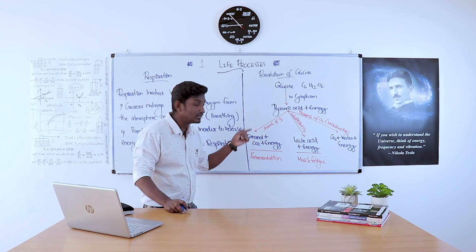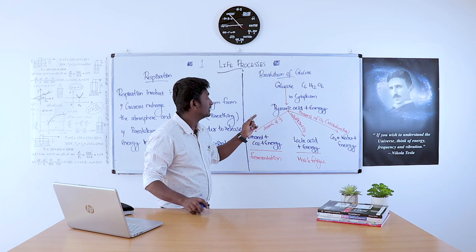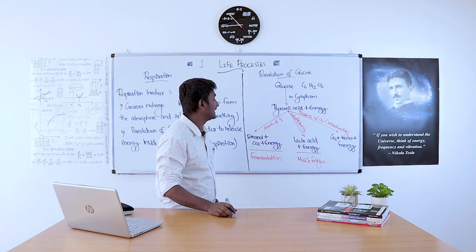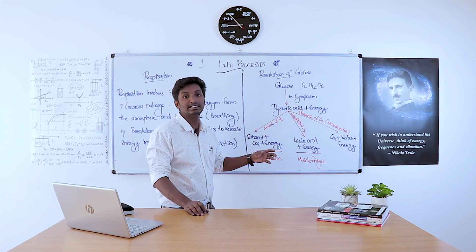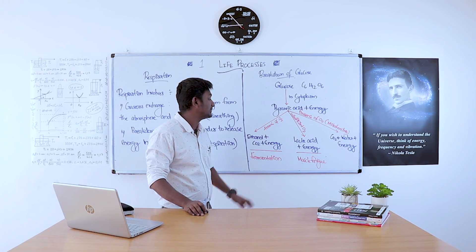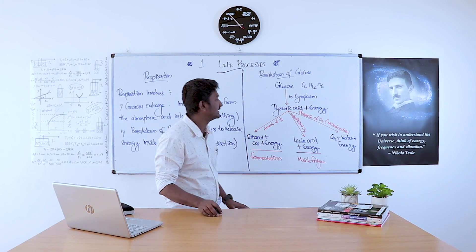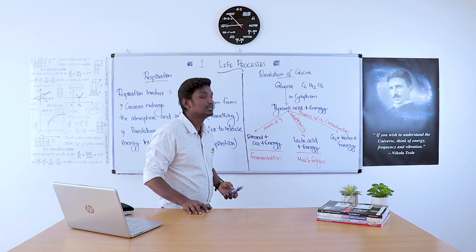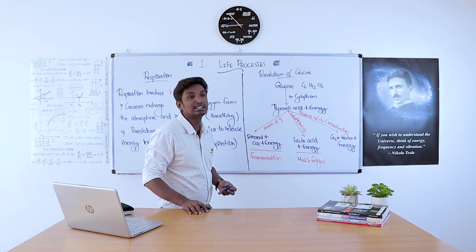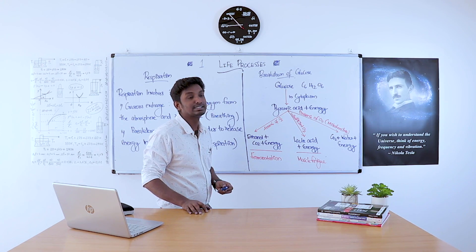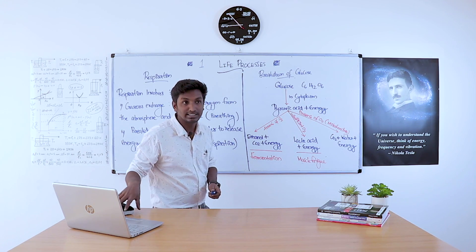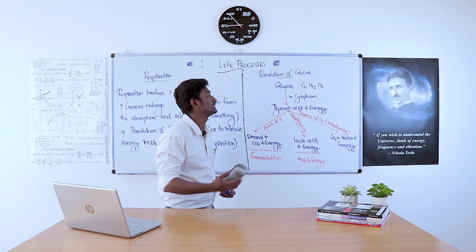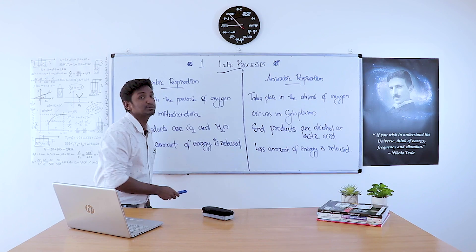In the process of fermentation, due to insufficient levels of oxygen, lactic acid and energy are produced. This lactic acid accumulates in the muscles, causing muscle fatigue. In the presence of oxygen, in the mitochondria, the process produces carbon dioxide, water, and energy. This is the process of breakdown of glucose.